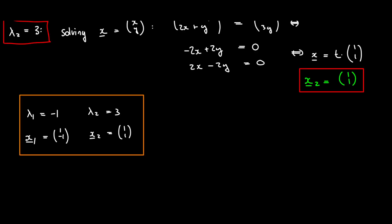According to our method, the matrix P is given by stacking x1 and x2 as columns. So the first column is (1, -1) and the second column is (1, 1). That's P.